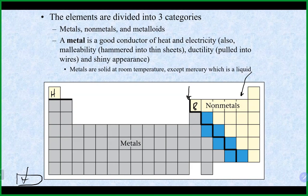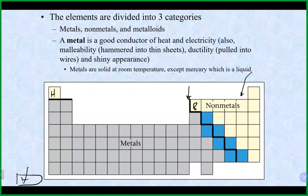Characteristics of metals: they are good conductors of heat and electricity, they are malleable (can be hammered into thin sheets or pulled into wires), and they typically have a shiny appearance. Almost all metals are solids at room temperature. The one exception is mercury (Hg, around element 80), which is a liquid at room temperature.